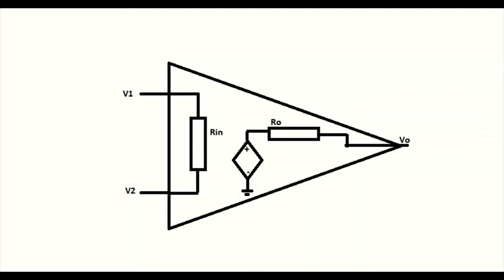The difference between the two inputs can be amplified by an ideal op-amp to infinity. For an ideal op-amp, there is zero output voltage for zero input voltage, so the input offset voltage is zero. The bandwidth of an ideal op-amp is infinite and it can amplify both DC and AC signals. The output voltage of the op-amp changes immediately with a change in the input voltage.